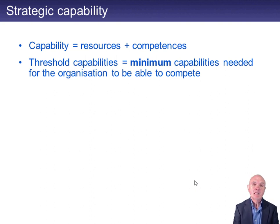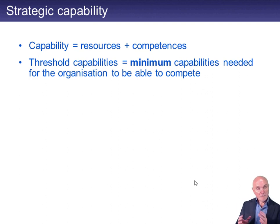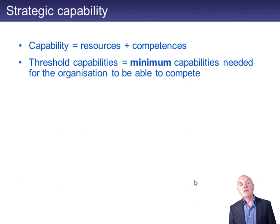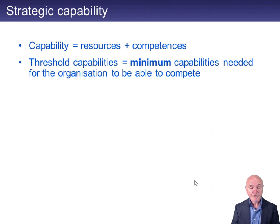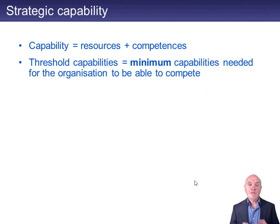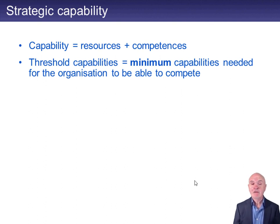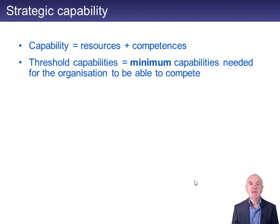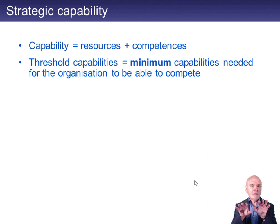Capability is made up of resources and competences. Think of a resource as a non-current asset — a machine — and think of the competence as knowing how to make use of that machine to make products. There's no point in having one without the other. The first step is reaching what are called threshold capabilities, which are the minimum capabilities needed just to allow you to compete, just to allow you to survive.